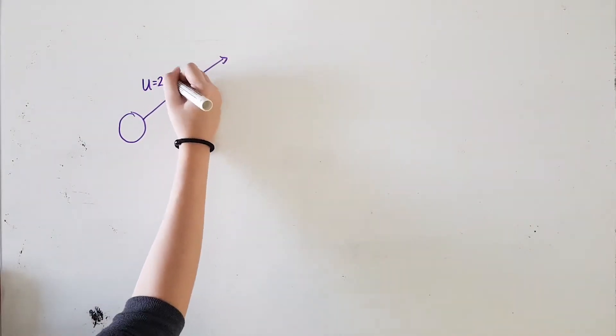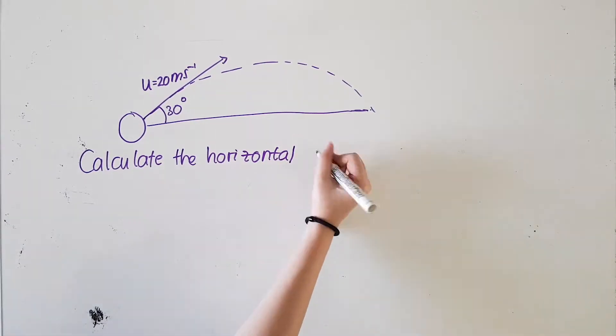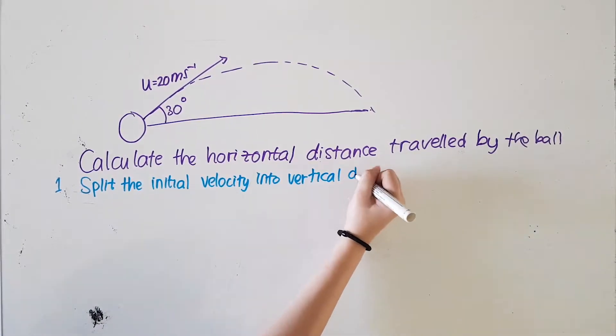So now we will go through an example. If a ball is thrown with an initial velocity of 20 meter per second at an angle of 30 degrees to the horizontal, the horizontal distance traveled by the ball can be calculated in three steps.